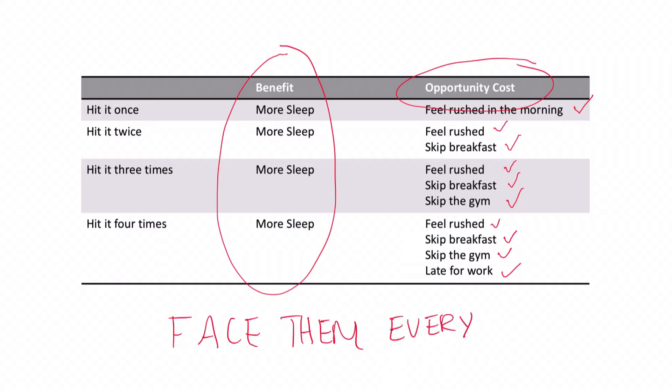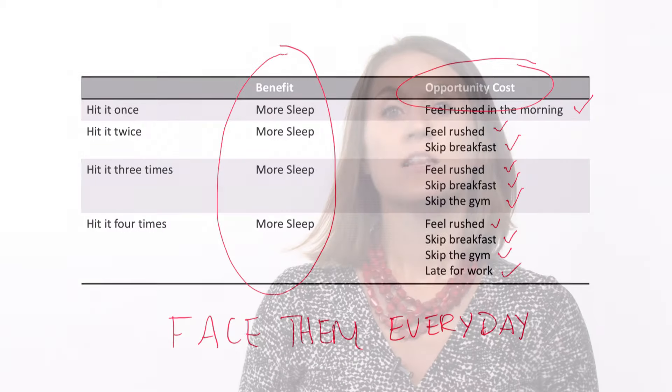We face opportunity costs every day and in every decision that we make, because we're always weighing the costs and benefits of the choices that we are faced with. We have scarce resources in terms of both money and time as individuals, and we need to make a decision of what to do with the resources that we have. So once we make a choice, what we give up to make that choice is the opportunity cost. Thanks so much for joining me in module 1.1 on scarcity, limited resources, and opportunity costs.